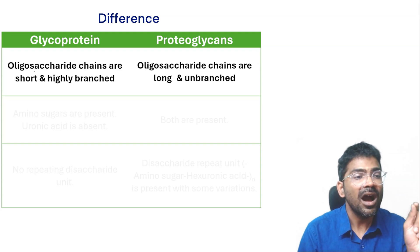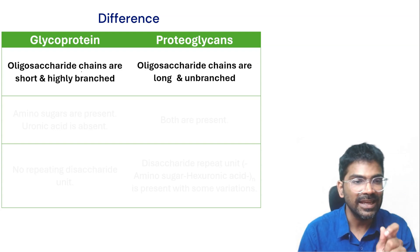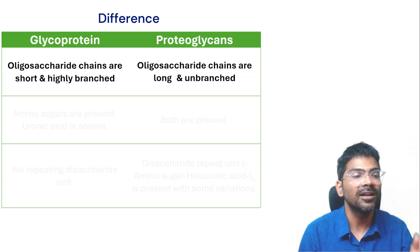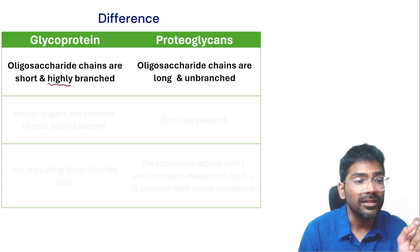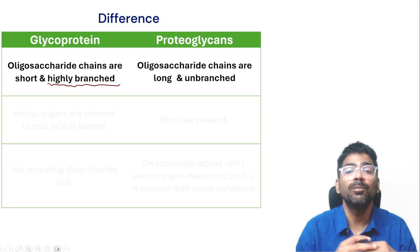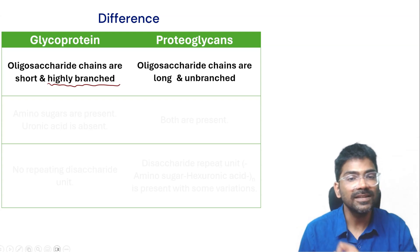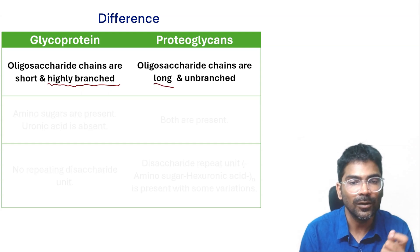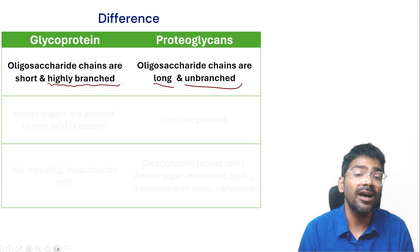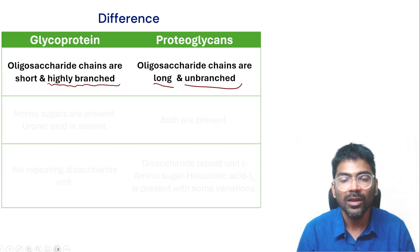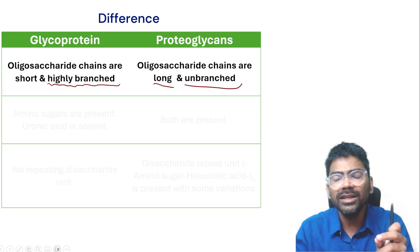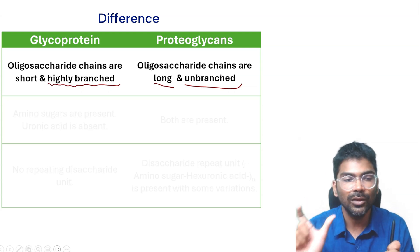In glycoproteins, the oligosaccharide side chains attached to the proteins are short and highly branched. Whereas in proteoglycans, the oligosaccharide side chains are long and unbranched, and they are usually made up of repeating disaccharide units.